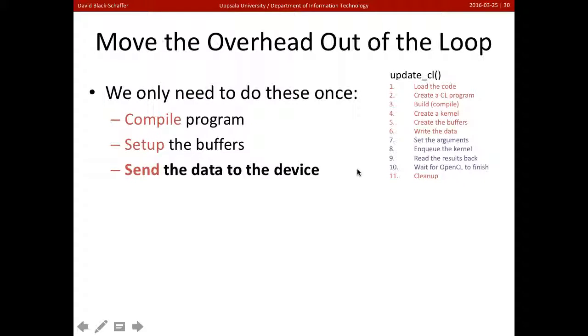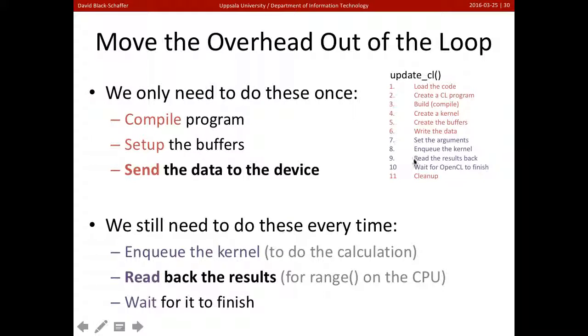So the trick here is we need to move the overhead out of the loop. Instead of doing all of this stuff in the loop every time—these red ones: compiling the program, setting up the buffers, sending the data to the device—we only need to do these once. We only need to initialize once and get the data to the device. Once we've done that, we can do these things every time in the loop. We need to enqueue the kernel, do the calculation, read back the results. But we don't need to write the data every time. We can keep the data on the device and reuse it in every iteration.